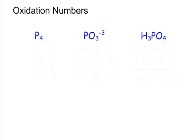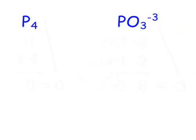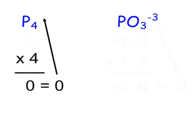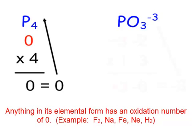Let's take a look at something like P4, which is the elemental form of phosphorus. As we can see, there's no charge up in the upper right-hand corner, so its overall charge is zero. And so what times four, since we have four P's, what times four equals zero? Of course, zero. Anything in its elemental form, whether we're talking about fluorine gas F2, chlorine gas Cl2, neon gas Ne, or sodium metal, anything in its elemental form will have an oxidation number of zero.